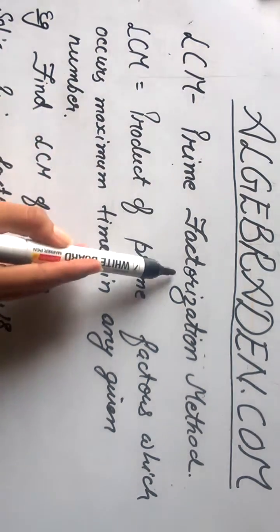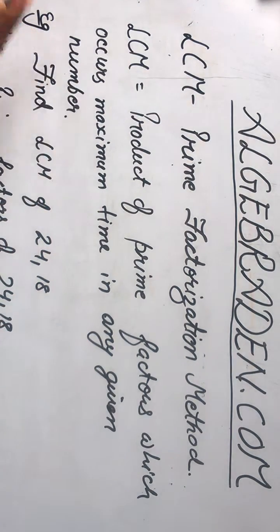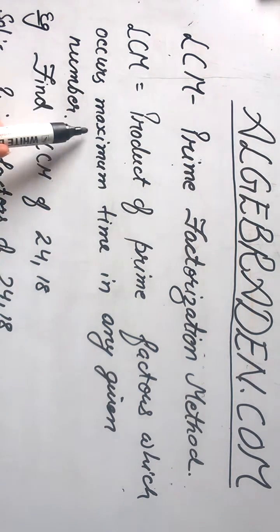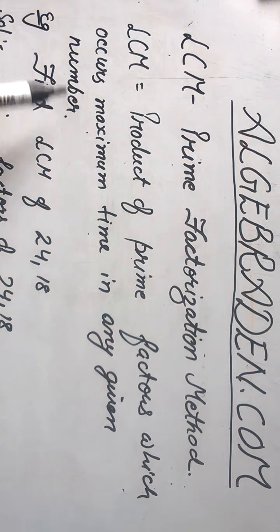Calculate LCM by Prime Factorization Method. LCM is product of prime factors which occurs maximum times in any given number.